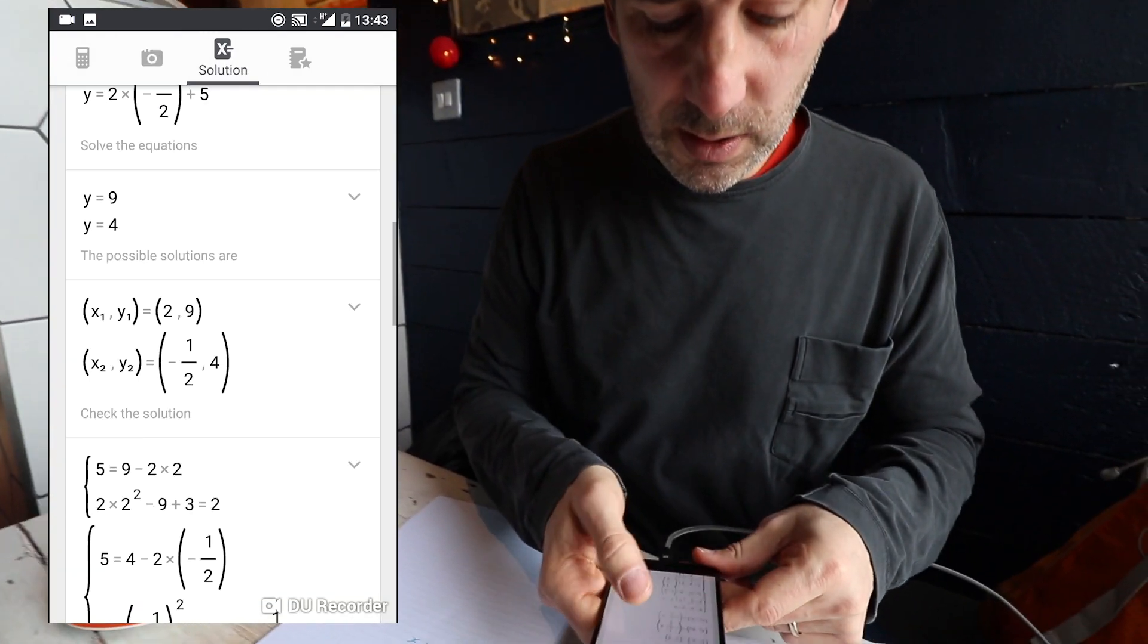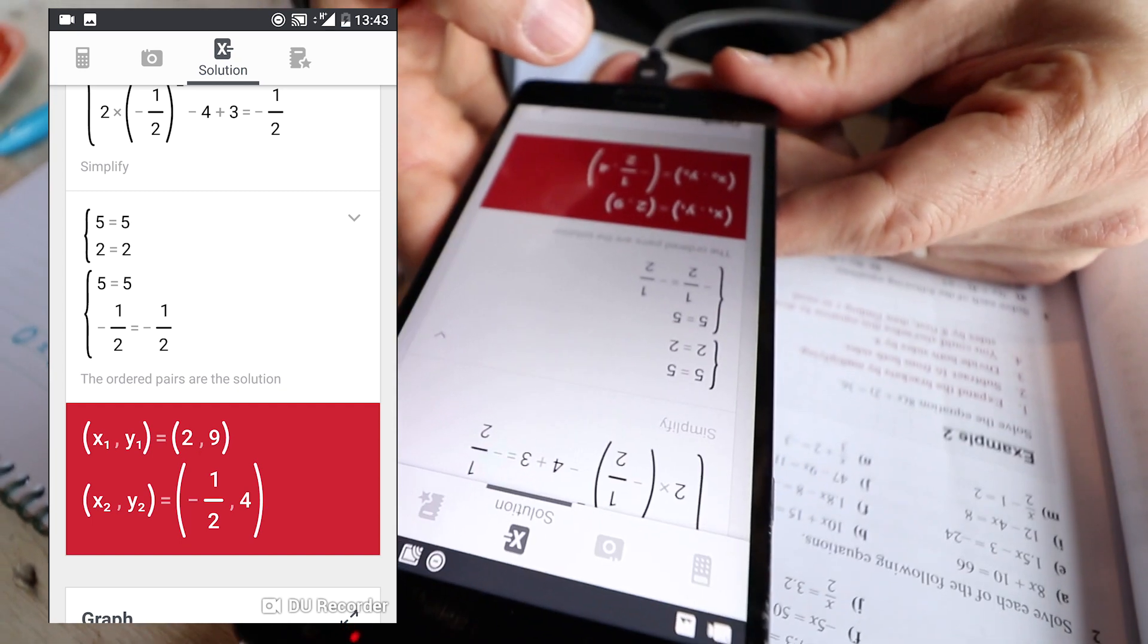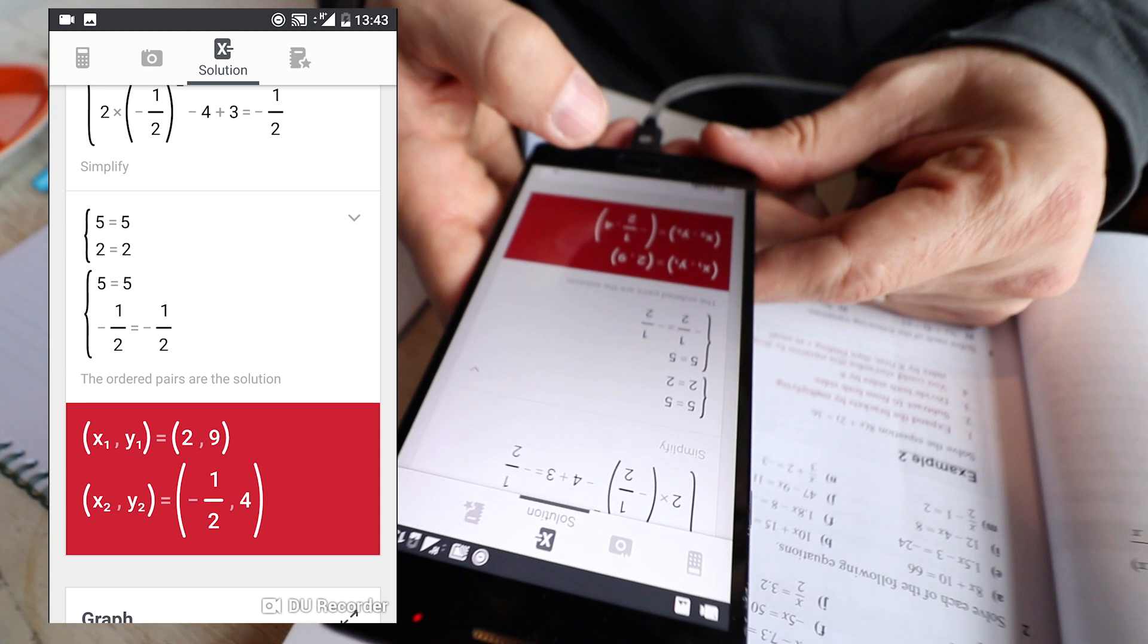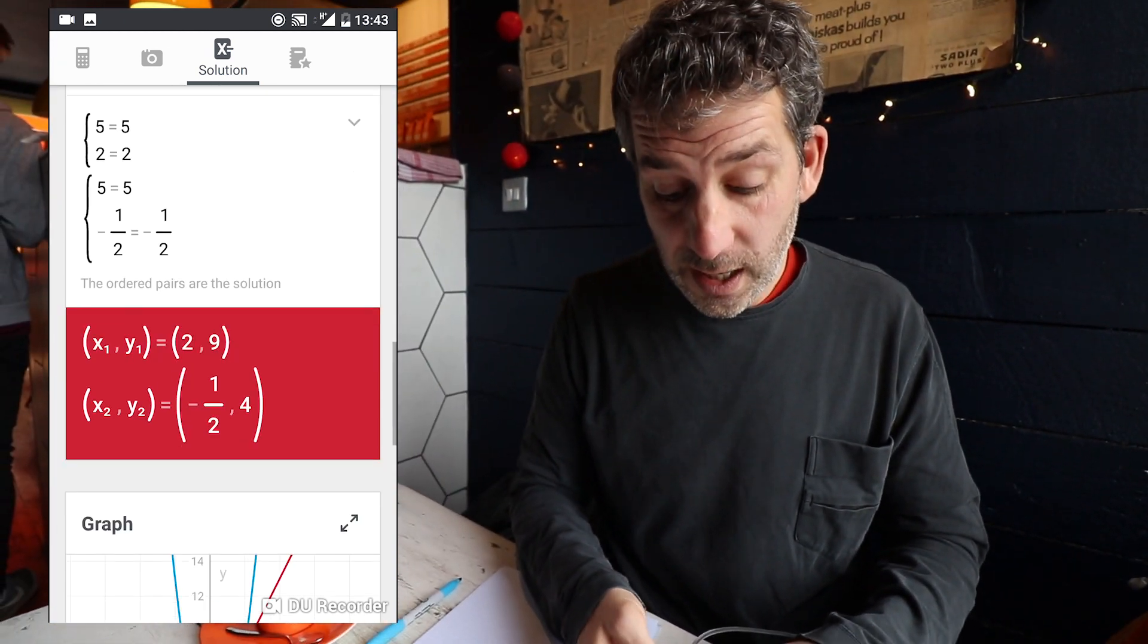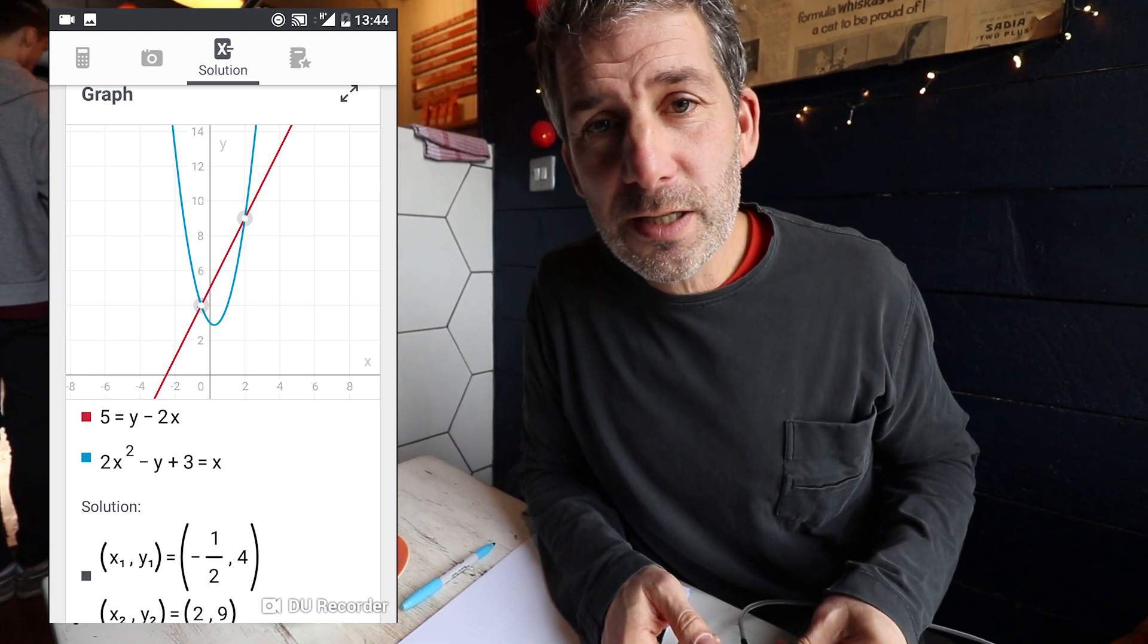We've got our solutions there. So I'll scroll down very quickly. You can see either x is 2 and y is 9 or x is equal to minus a half and y is equal to 4. And again, we've got the graph for that down there. Genius, isn't it?